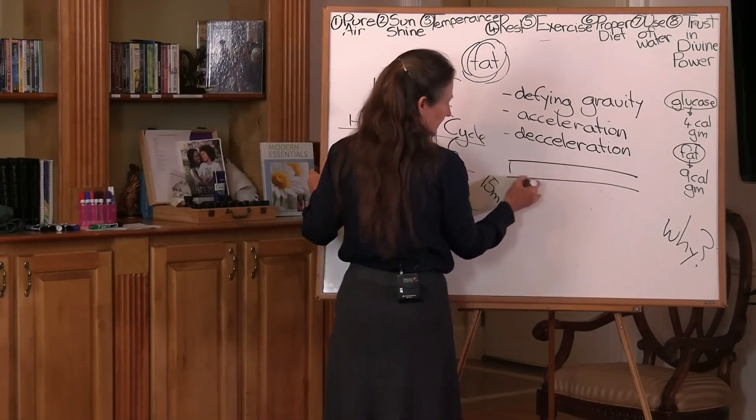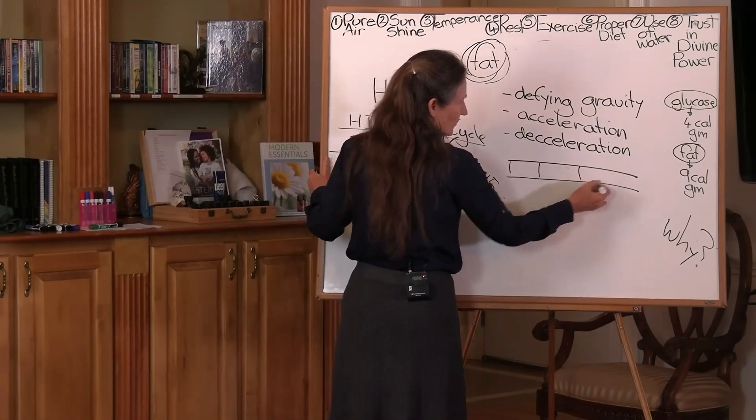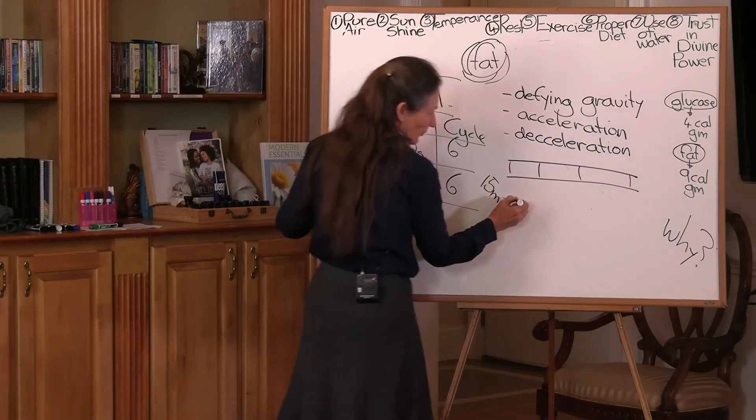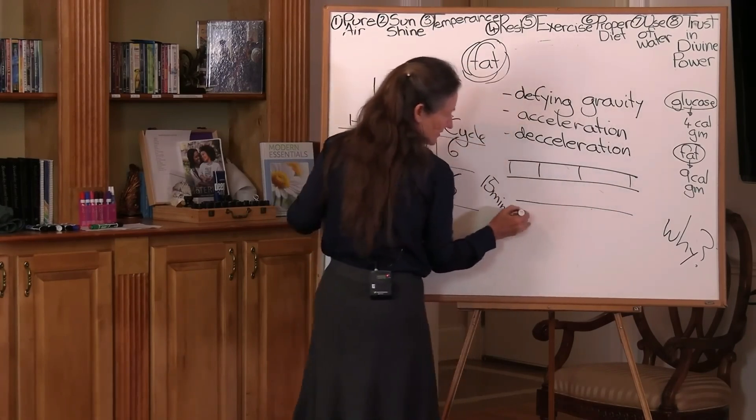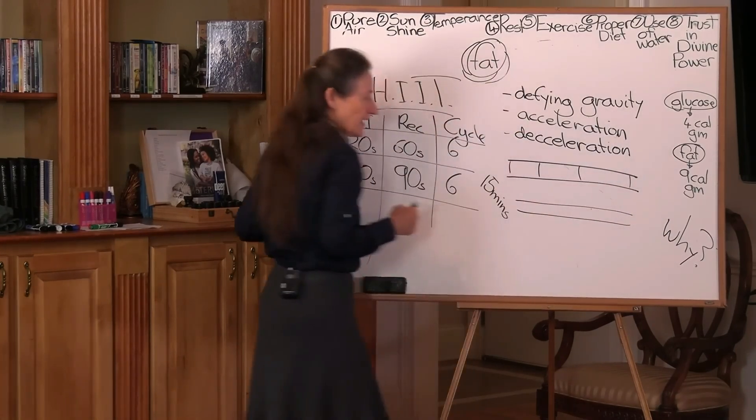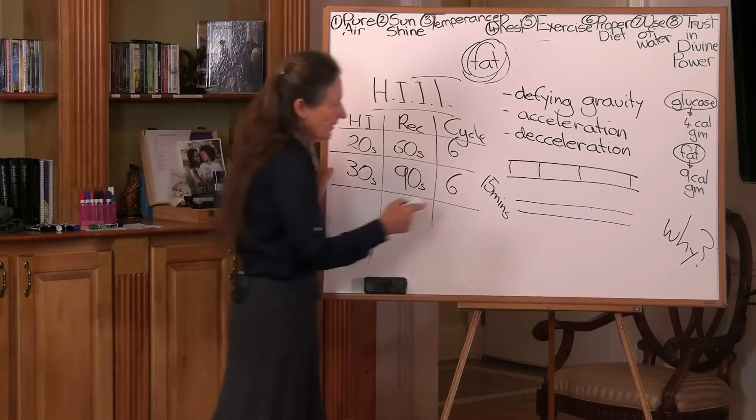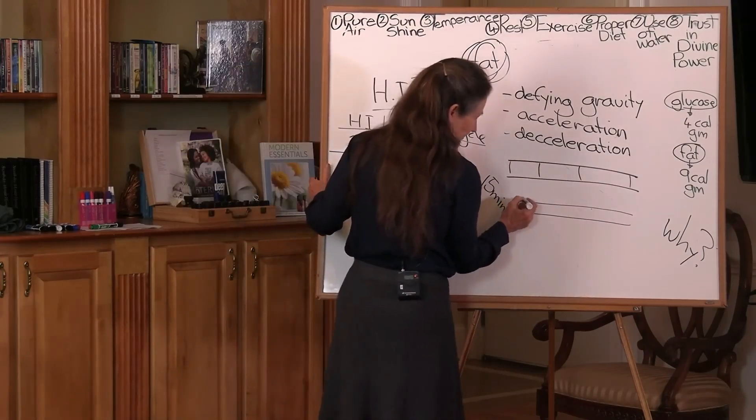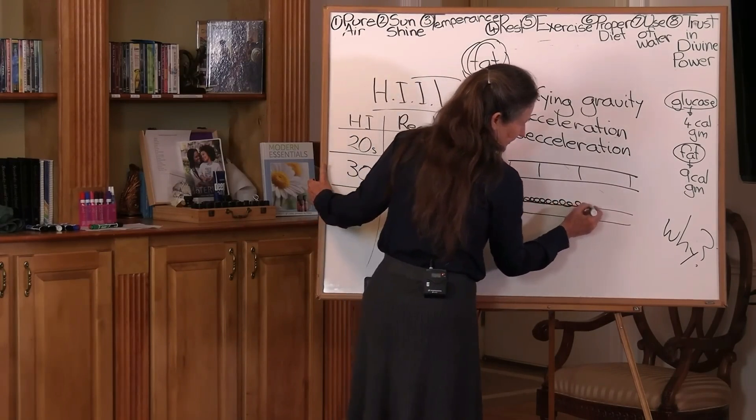Your lymphatic system has little gates like this all along. Now, your blood capillary system looks very similar, but it doesn't have those little gates. And your blood capillary system has muscles on either side of it.